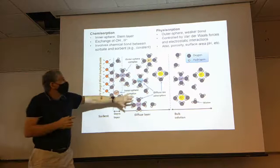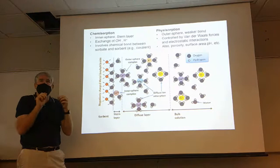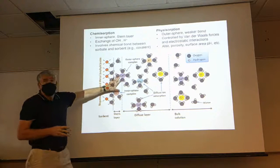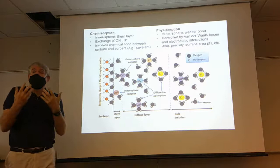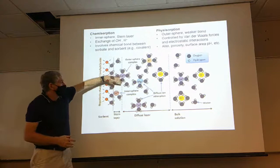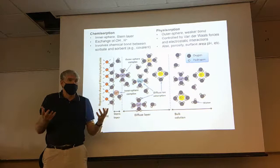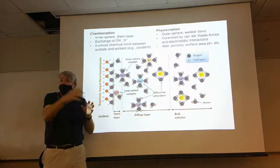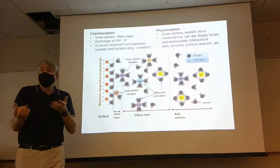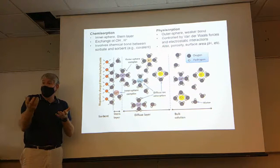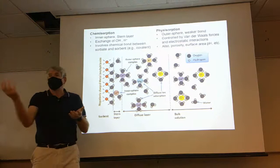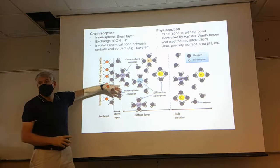Out here we call that physiosorption — some call it physical sorption. This is the outer layer and the bonds tend to be weaker, held in place almost totally by van der Waals forces, which are electrostatic forces. In the inner layer we have much stronger bonds — they could be like covalent bonds where we actually share electrons. Why do we care? If it's a weak bond, it's easier to pull off the surface, easier for it to get into biota.